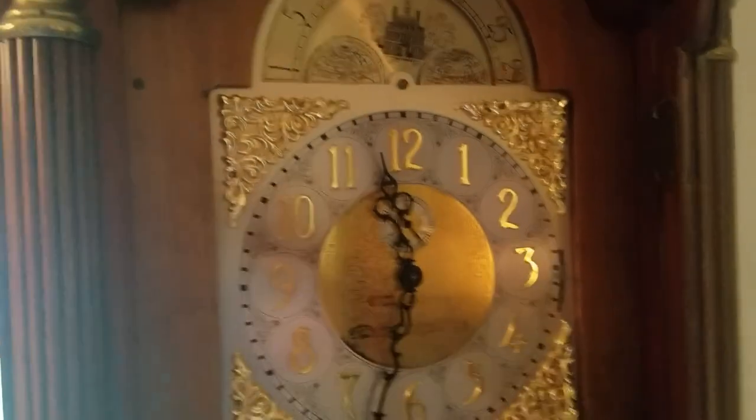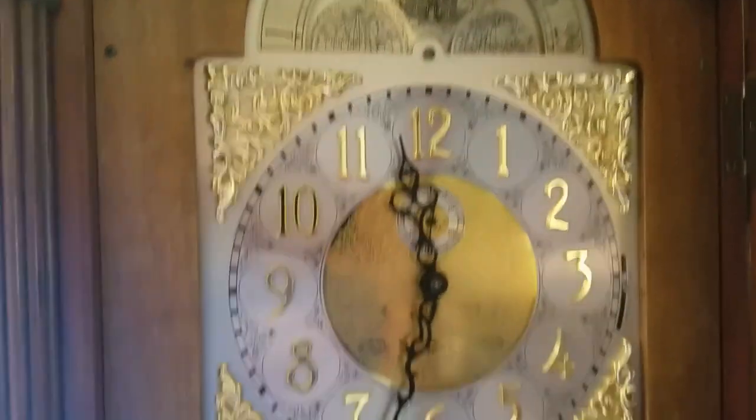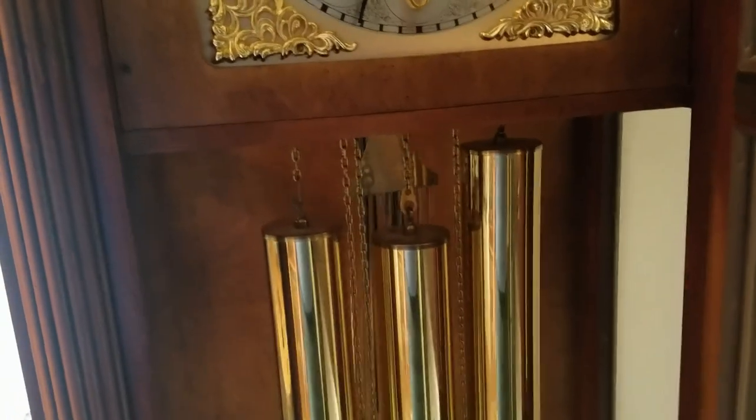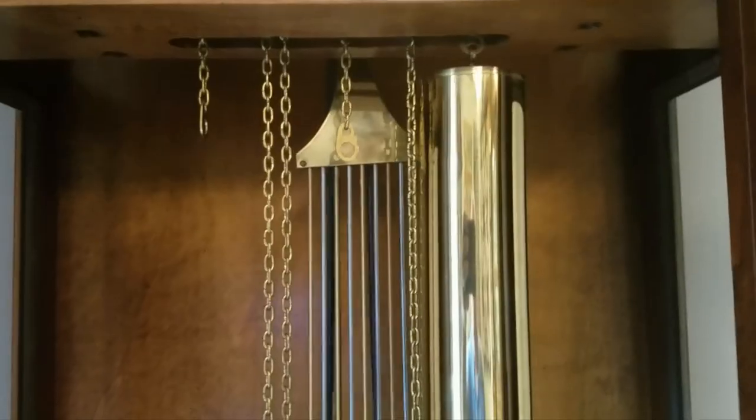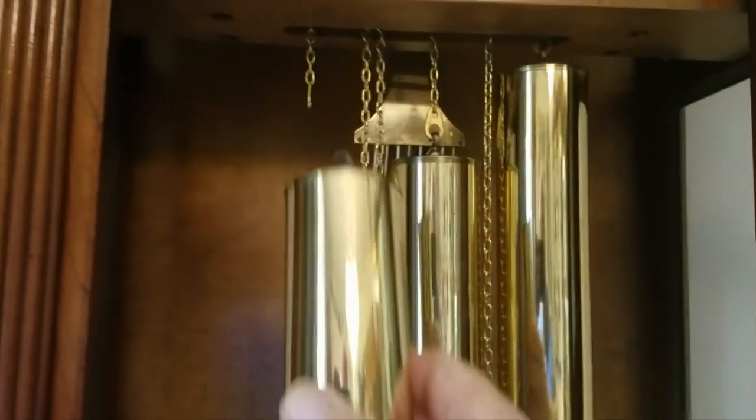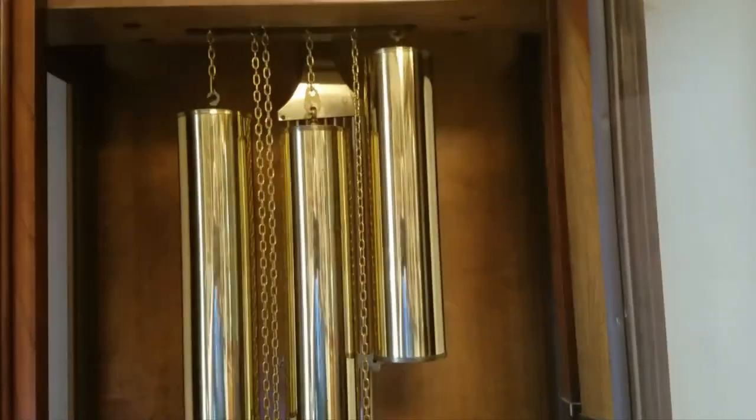So if nothing else, Howard's ticking again. You can see the second hand going around. We have to go through and set everything, but I'm not going to do that until I let it run a while and see just what the speed is going to be. But before I do that, I have to move it back into the corner again, which means taking the weights off.